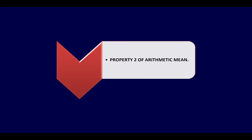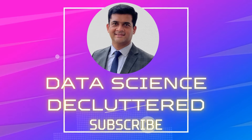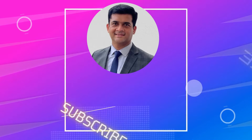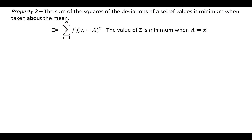In today's video, we will see the second property of arithmetic mean. The second property is that the sum of the squares of the deviations of a set of values is minimum when taken about the mean — that is, the value of z will be minimum when a is equal to the arithmetic mean, x bar.